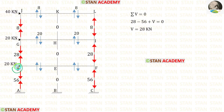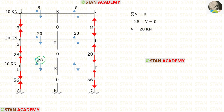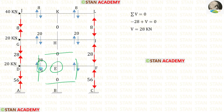Now let us take joint D. This force is acting upwards, so that will be positive. This force is acting downwards, so that will be negative. This force is acting upwards, so that will be positive. Finally, for V we are getting 28 kN. Let us apply that. Now let us take joint E. This force is acting downwards, so that will be negative. This force is acting upwards, so that will be positive. Finally, for V we are getting 28 kN. Let us apply that.